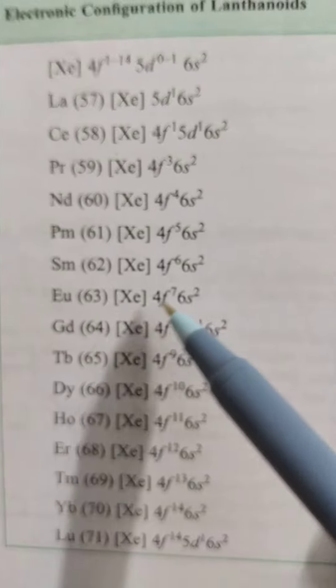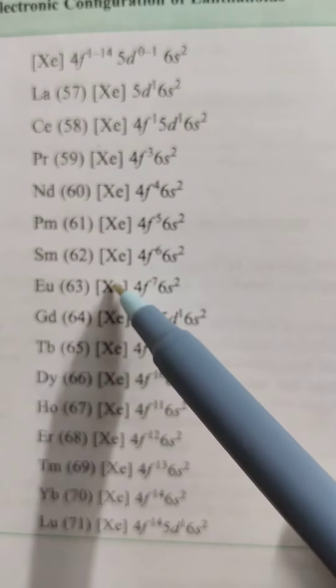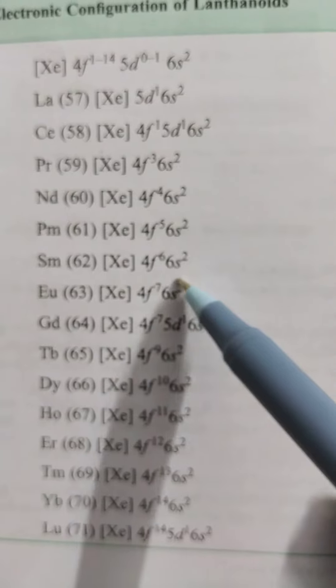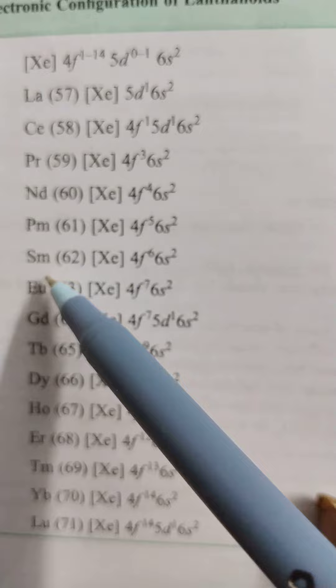If you observe Europium, it loses 2 electrons. Europium+2, xenon 4f^7 6s^2. You remove 2 electrons, so Europium+2 is more stable.